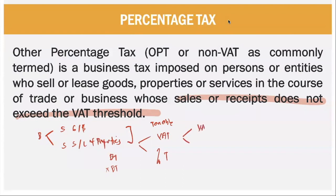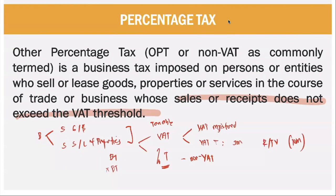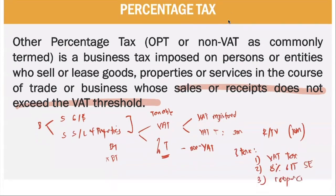You are a VAT taxpayer if you are VAT registered or you exceed the VAT threshold of 3 million pesos for all transactions, except for franchise grantees of radio or TV, which has a threshold of 10 million. If you are not VATable, then you are considered non-VAT and you have your percentage tax. Note that percentage tax does not apply to VAT taxpayers, nor to self-employed individuals opting for the 8% gross income tax.